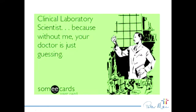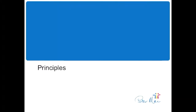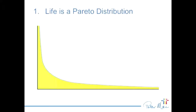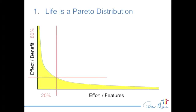Without us, your doctor is just guessing — so we're trying to improve that. Just to go through a couple of principles I have for software development: life is a Pareto distribution. If you took everyone's income in this room, put them from highest to lowest and drew a graph, a Pareto curve is a straight line on a log-log graph. From a software development point of view, you want to concentrate on the 20% of features that give you 80% of the benefit. Do those features first because they're the ones that will give you maximum bang for your buck.